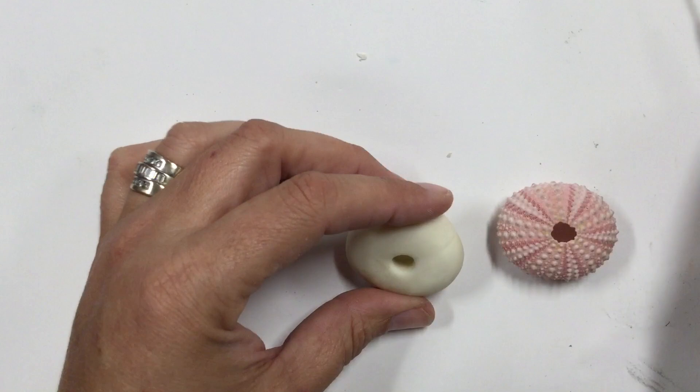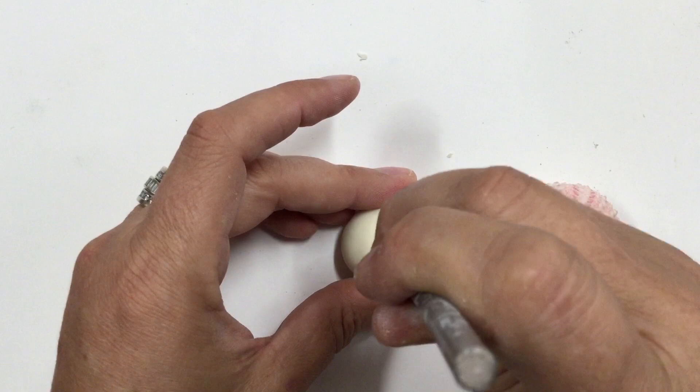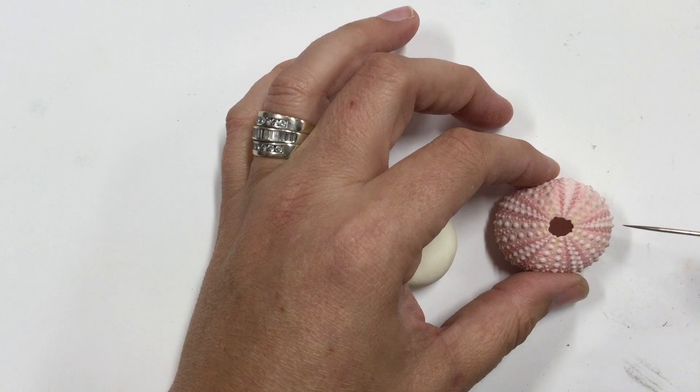It's just going to make it that much more believable. Then, again, you are going to use a bamboo skewer to just kind of push away just a little bit that you can see there so that the center looks realistic.